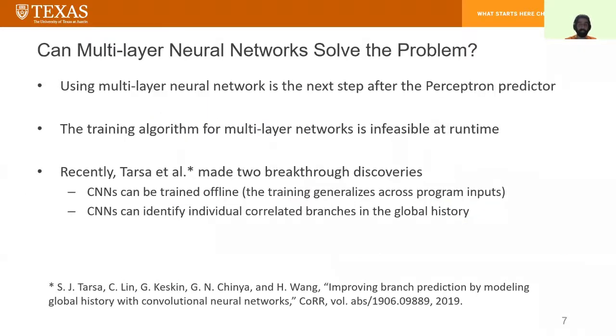But we can do better than a single Perceptron. We could use multi-layer neural networks. Multi-layer neural networks are traditionally problematic because their training is infeasible at runtime. But recently, Tarsa and others made two breakthrough discoveries. They've shown that CNNs can be trained offline because their training generalizes well across program inputs. And they've shown that CNNs can identify individual correlated branches in the global history which helps us with dealing with noise.